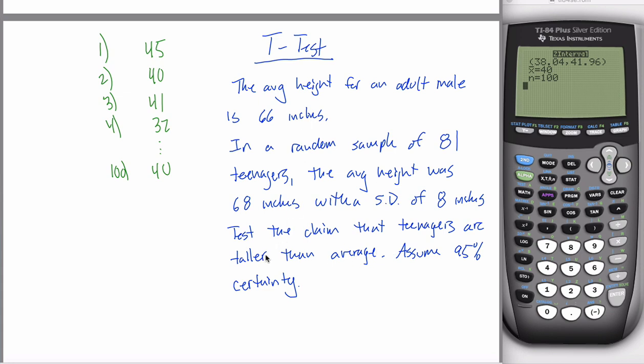You're given this problem right here. This is a t-test example, because we're asked to test some sort of claim. If you go reading through the problem, looking for the information that is given, the average height for an adult male is 66 inches. This is a population average, it's the baseline that we'll be comparing things against. In the past, we used the symbol mu naught for this value, and we're still going to. Mu naught is still 66 here.